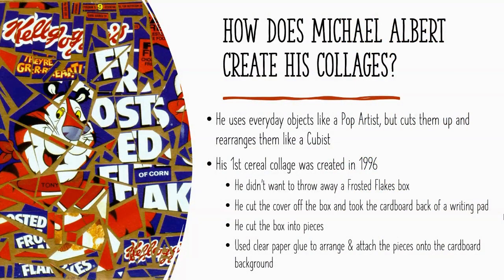So how does Michael Albert create his collages? He uses everyday objects like a pop artist, but he cuts them up and rearranges them like a cubist. His first cereal collage was created in 1996 when he didn't want to throw away a Frosted Flakes box. He cut the cover off the box and used a cardboard backing from a writing pad as his background. He cut the box into pieces and used clear glue to arrange and attach the pieces, and the end result is the piece you can see on the left.